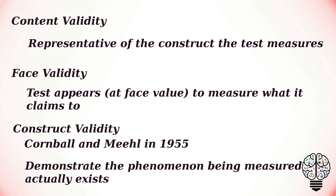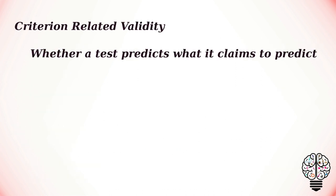Another major type of validity is criterion-related validity. It is a validation method used to determine whether a test predicts what it claims to predict. A test has evidence of criterion-related validity when it demonstrates that its scores are systematically related to a relevant criterion.